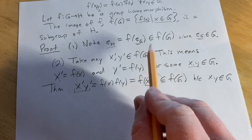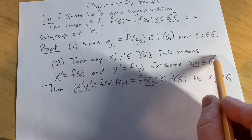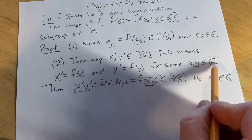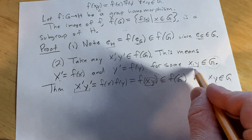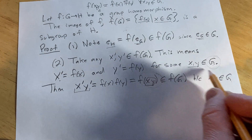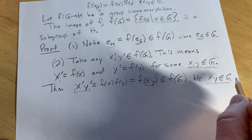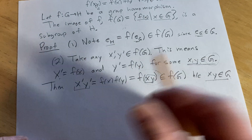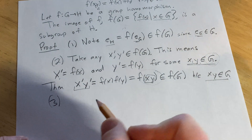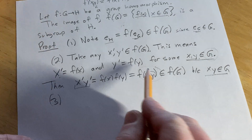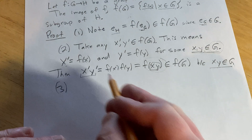Basically, the image is closed under the group operation because the group G itself is closed under the group operation. Three, we have to show that the image of f is closed under inverses.